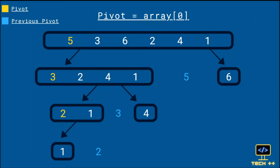In the next pass, we again determine the pivot for the two partitions separately. For the left partition, the pivot is 3 since it is the first element of that partition. Similarly, the second partition will take the first element as a pivot. Now, there is only one element in the right partition, so we do not perform any operation on it. Considering the left partition, elements less than our pivot 3 will be partitioned into the first array, which gives us 2 and 1.